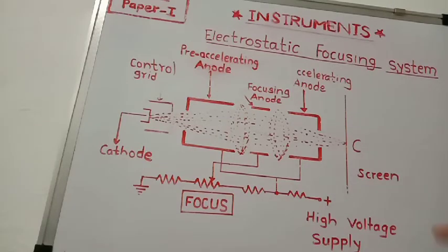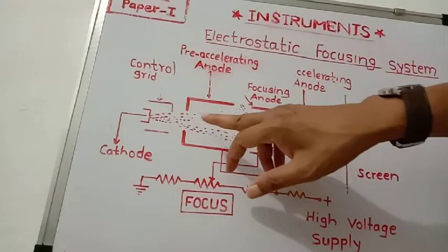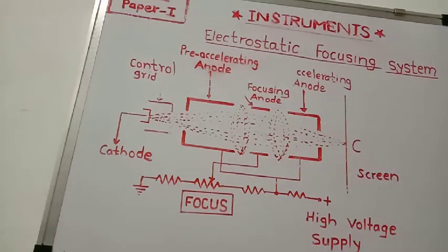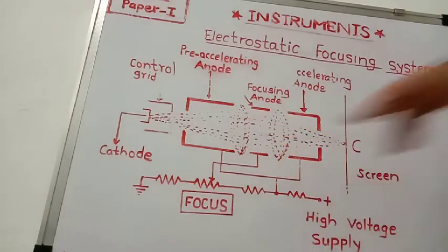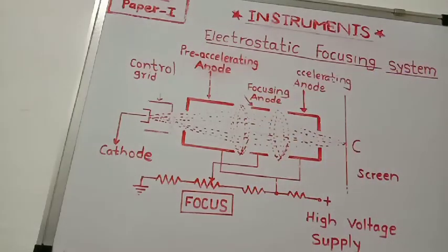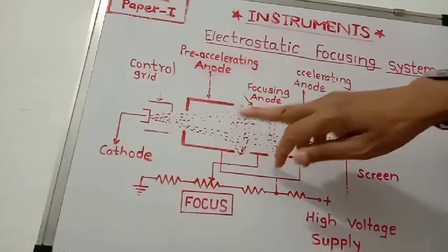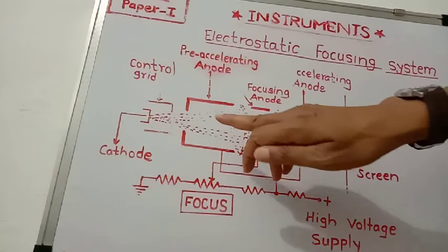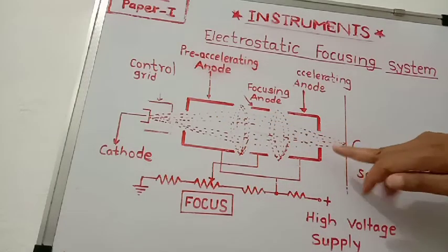When the electron beam passes through these anodes, the electrons experience a force which is normal to the equipotential surfaces. Therefore, the electron beam is converged.